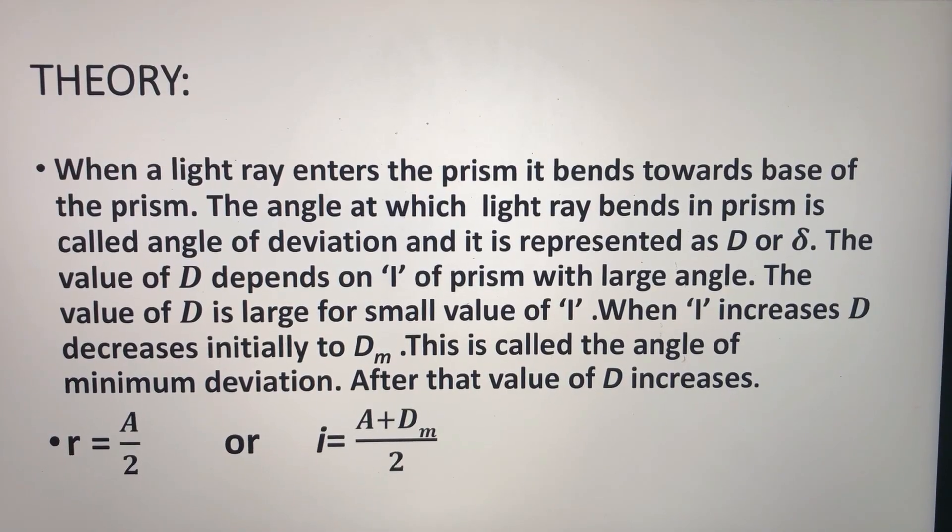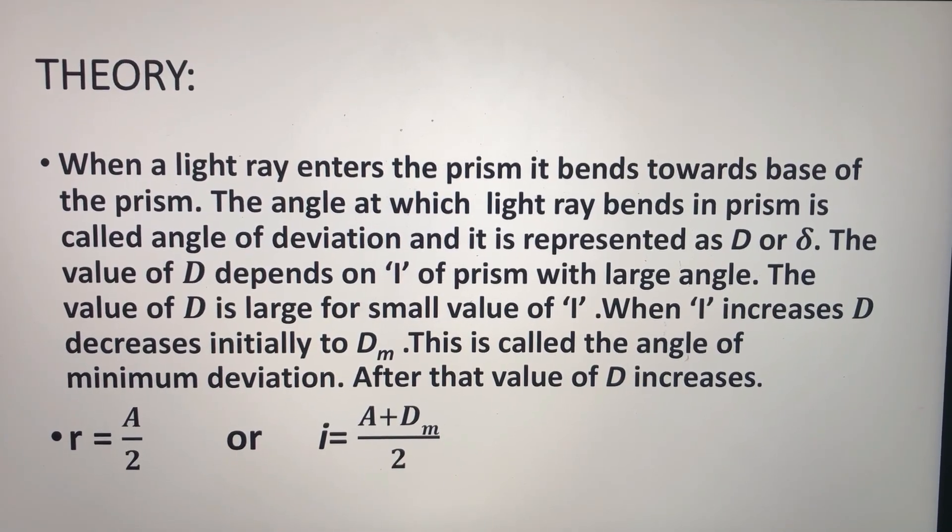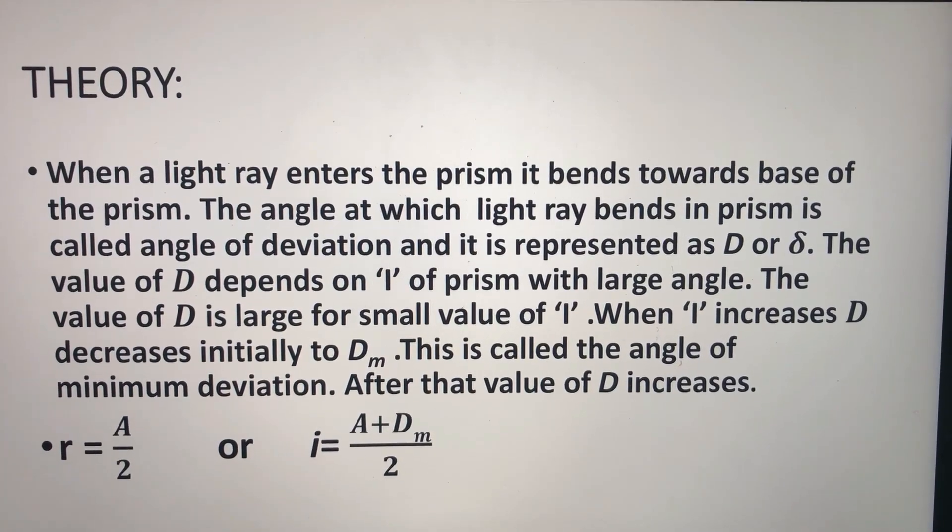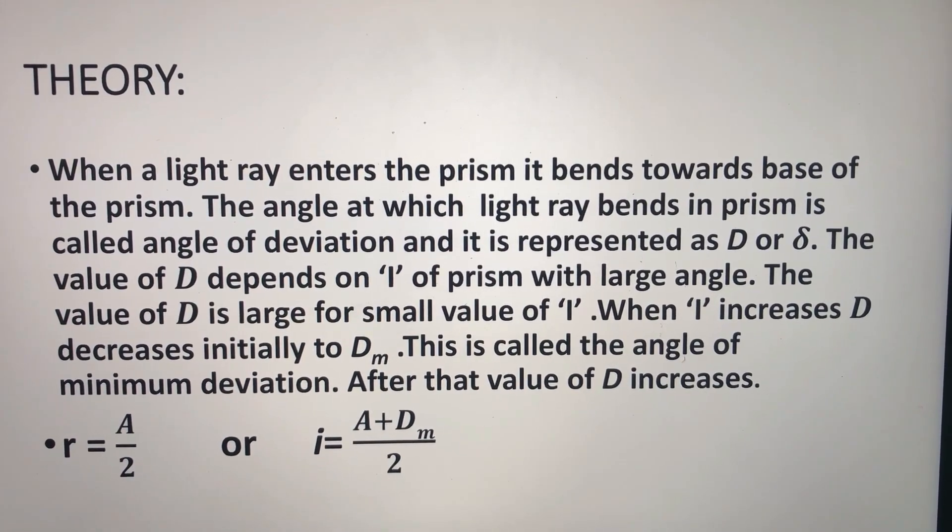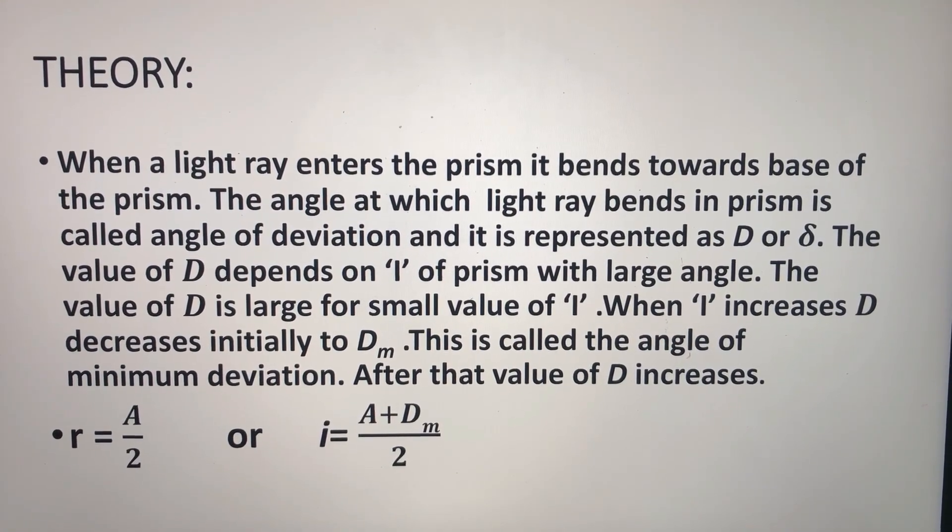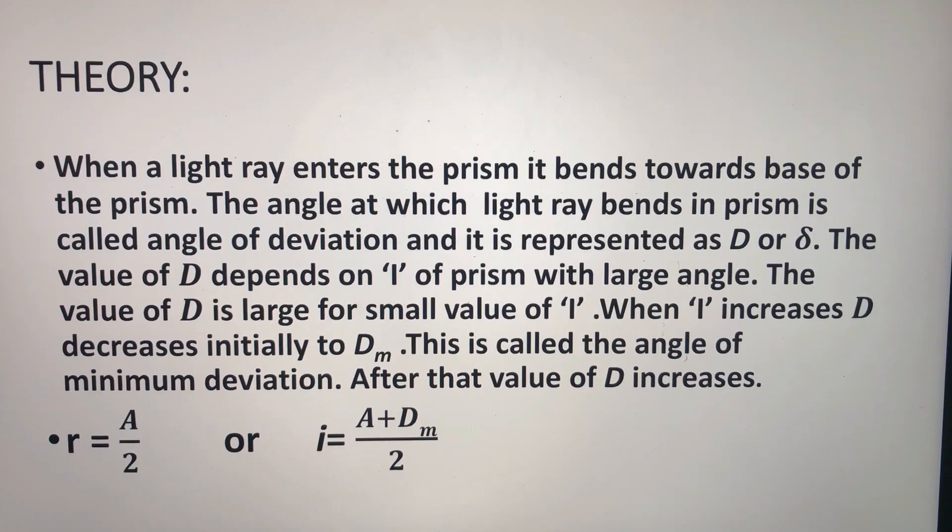When i increases, D decreases initially to D_m. This is called the angle of minimum deviation. After that value of D, it increases. So, r equals A by 2 or i equals A plus D_m by 2.